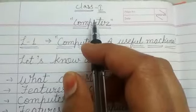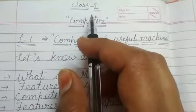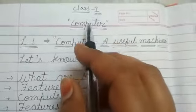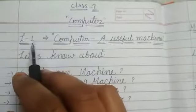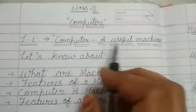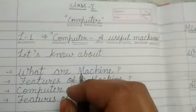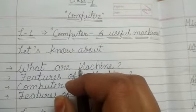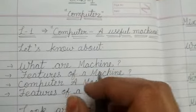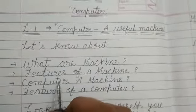Hello kids, how are you? Welcome to the Balglo Learning App. Class 1, subject is Computer, Lesson 1: Computer - A Useful Machine. Kids, today we will learn about computers. Remember two important points about computers and machines in this lesson.